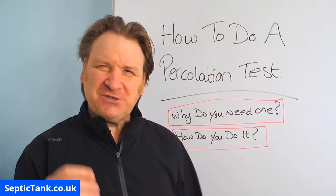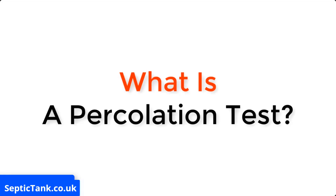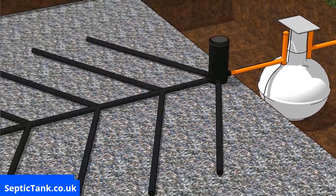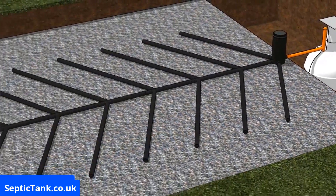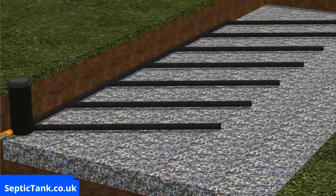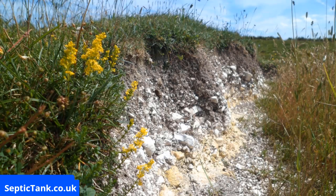So what is a percolation test? A percolation test determines if the ground is suitable for a soakaway or not, and that the wastewater that enters the soakaway from the septic tank can drain away naturally into the soil.